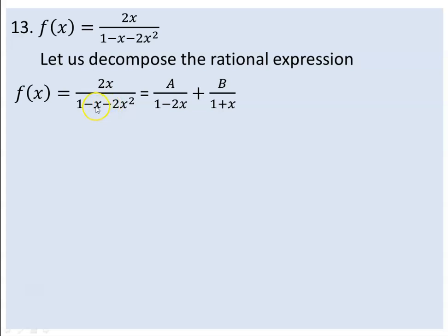We have A plus B equals 0, and A minus 2B equals 2. From these equations, 3B equals minus 2, so B equals minus 2/3 and A equals 2/3.